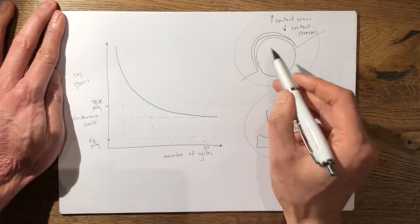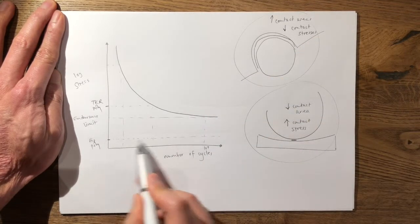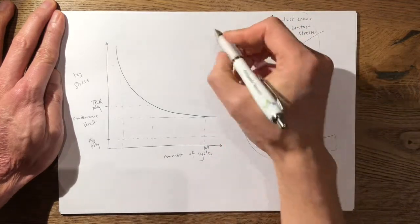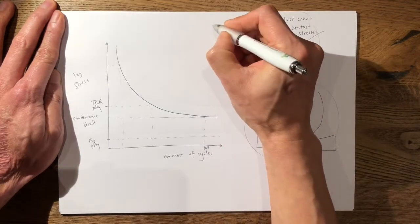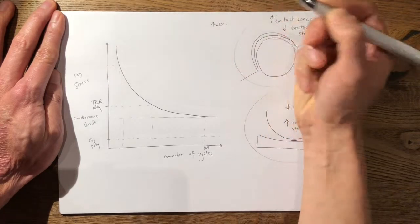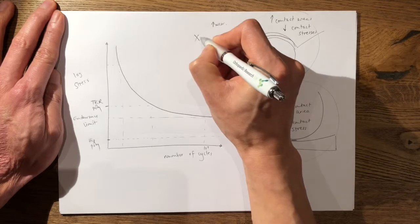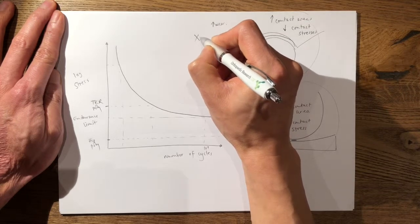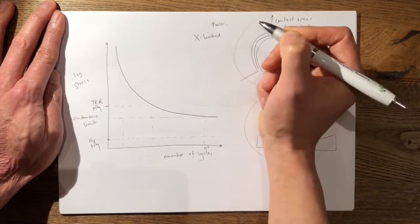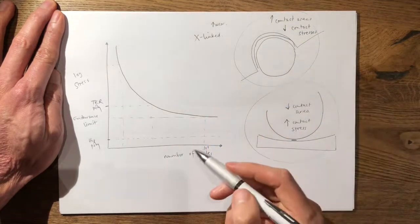Which is why in a total hip replacement the important properties of the polyethylene isn't fatigue resistance because it operates in low stresses. The important properties are that of increased wear properties, which is why in a total hip replacement you're more likely to see a cross-linked polyethylene which has much better wear properties but less fatigue resistance.